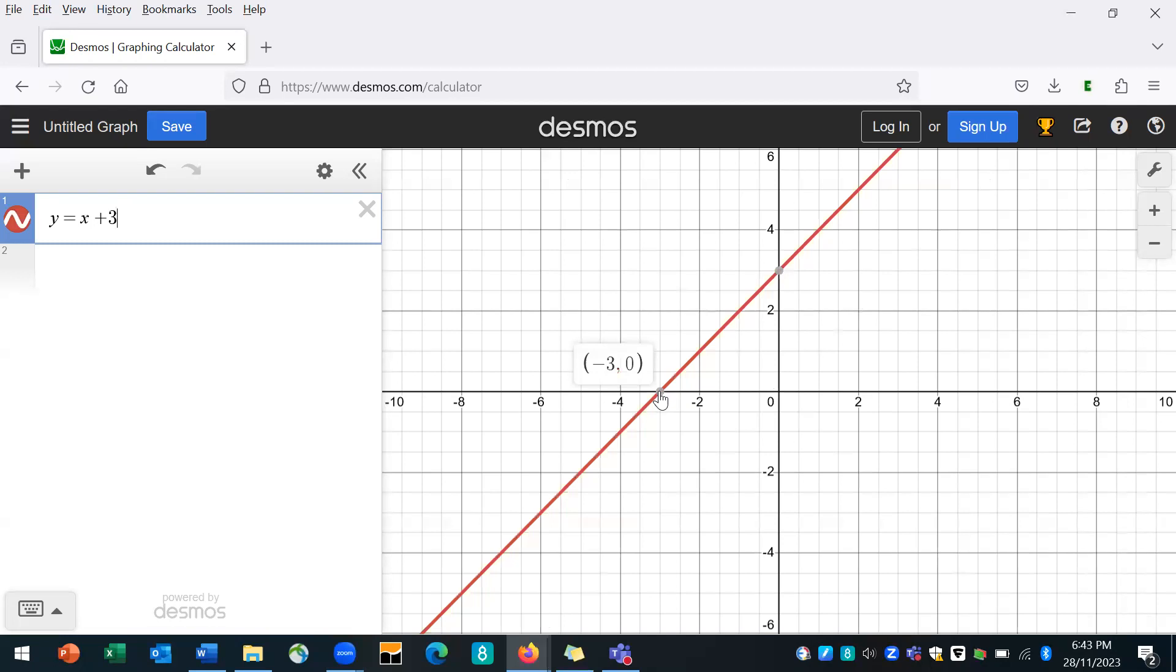So when you add something to x, then it moves along the horizontal axis. But when you add something to y, it moves along the vertical axis. Okay? So you understand a little bit more when we look at more complicated function.